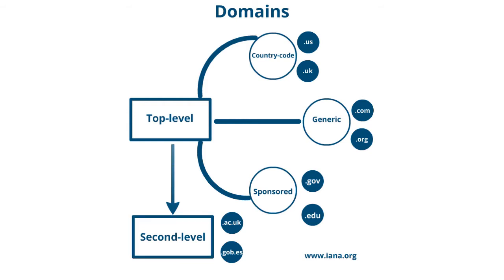For instance, the second-level domain for British universities is .ac.uk and the second-level domain for Spanish government agencies is .gov.es. For an up-to-date and complete listing of top-level domains, visit the Internet Assigned Numbers Authority database at www.iana.org or see the Wikipedia entry list of internet top-level domains. You can find second-level domains listed on the Wikipedia page of the respective top-level domain.